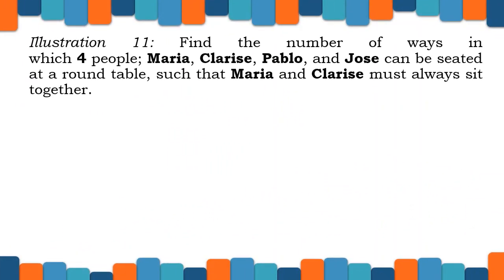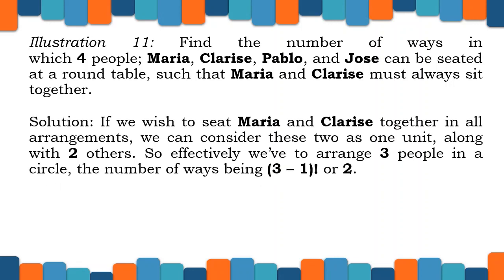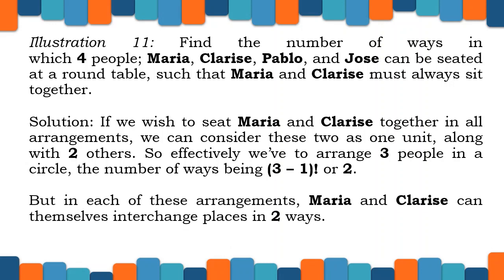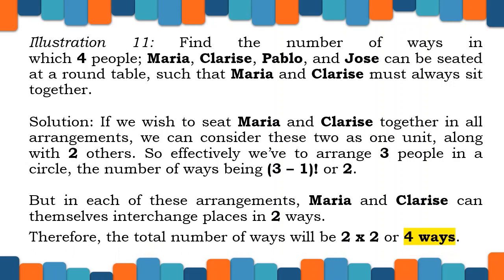Let us have illustration 11. We have a round table such that Maria and Clarice must always sit together. If we wish to sit Maria and Clarice together in all arrangements, we can consider these two as one unit, along with two others. So effectively, we arrange 3 people in a circle. The number of ways being (3 minus 1) factorial, or 2. But in each of these arrangements, Maria and Clarice can themselves interchange places in 2 ways. Therefore, the total number of ways will be 2 times 2, or 4 ways.